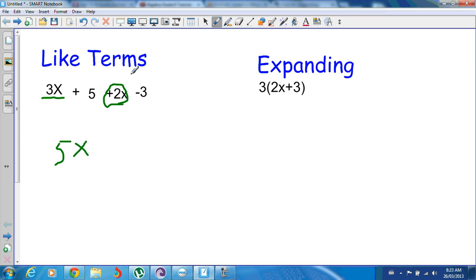Now I can go ahead and put together my constants. In other words, just the plain numbers. So I've got a positive five and a negative three. So five take away three is going to leave me with a positive two.